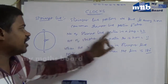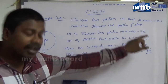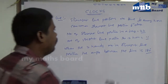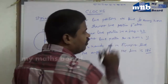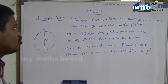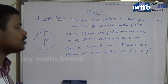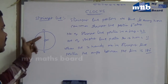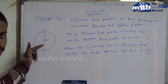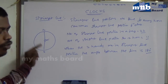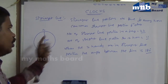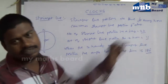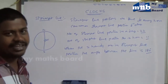The number of straight line positions per 12 hours is equal to 11. This is because in 12 hours, we face only one 6 o'clock position — either morning or evening — so the number of straight line positions per 12 hours is 11 times.